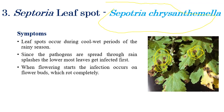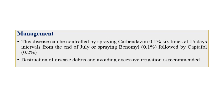For management of Septoria leaf blotch, spraying of carbendazim at 15-day intervals is recommended — one or two sprays should be sufficient rather than six times, as that would be expensive for farmers. Spraying with bavistin followed by captan flow at 0.2% is also effective. Destruction of plant debris and avoiding excess irrigation are important, as irrigated water can spread the disease from one field to another.